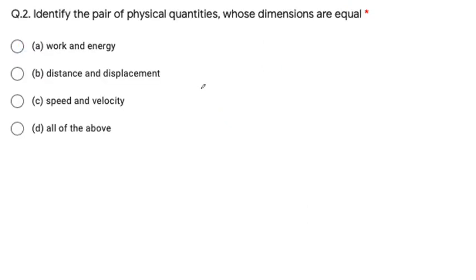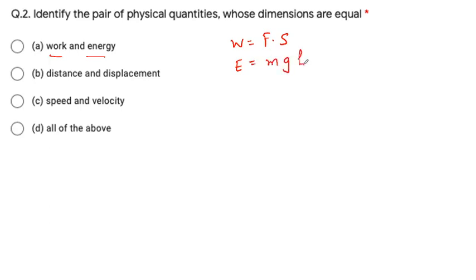The second question is: identify the pair of physical quantities whose dimensions are equal. The first option is work and energy. Work is force into displacement, and energy — taking potential energy — is MGH. So work and energy have the same units.